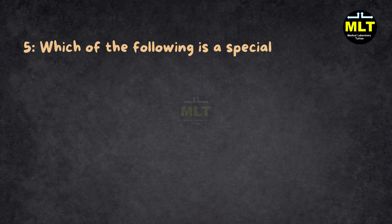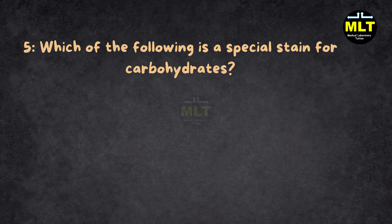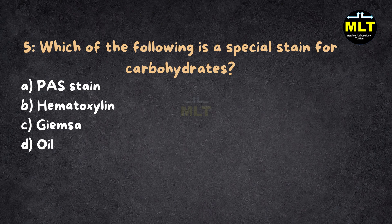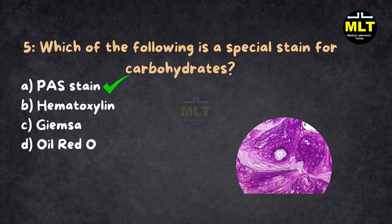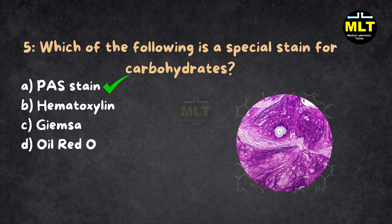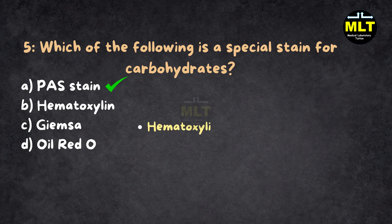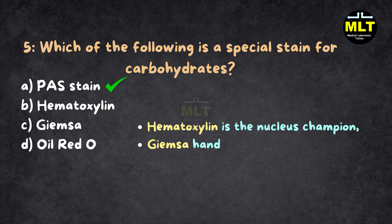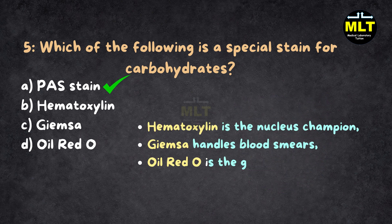Question 5: Which of the following is a special stain for carbohydrates? Options: A. PAS stain, B. Hematoxylin, C. Giemsa, D. Oil red O. Correct answer: A. PAS stain. Explanation: PAS stain loves carbohydrates, turning them magenta with its unique chemistry. Hematoxylin is the nucleus champion, Giemsa handles blood smears, and Oil red O is the go-to for fats. PAS is the carbohydrate king.